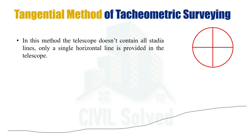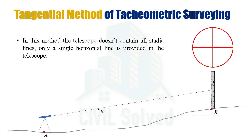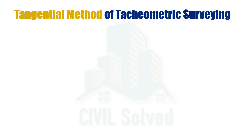The difference here is that the central stadia reading will be taken at two different angles. For example, if we have a cross section of land with two points, we place the instrument at one point and the staff at another. The first stadia reading will be taken at theta one and then the second stadia reading will be taken at theta two. The difference of these two readings will then be the stadia intercept, and by using the concepts of trigonometry the distances are calculated.